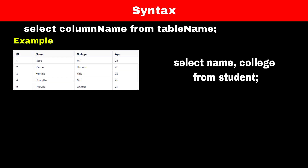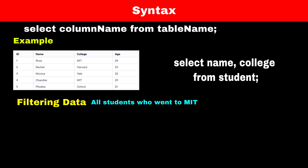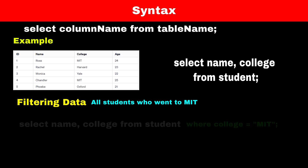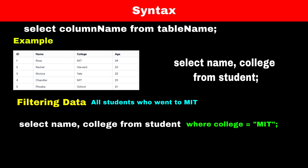Now for some use cases, if you want data of a student who went to MIT college only, then we can use a WHERE statement in our query. Whenever we want to apply a filter on any value of a column, we can use the WHERE statement. So the new query will be: SELECT name, college FROM student WHERE college = 'MIT'.